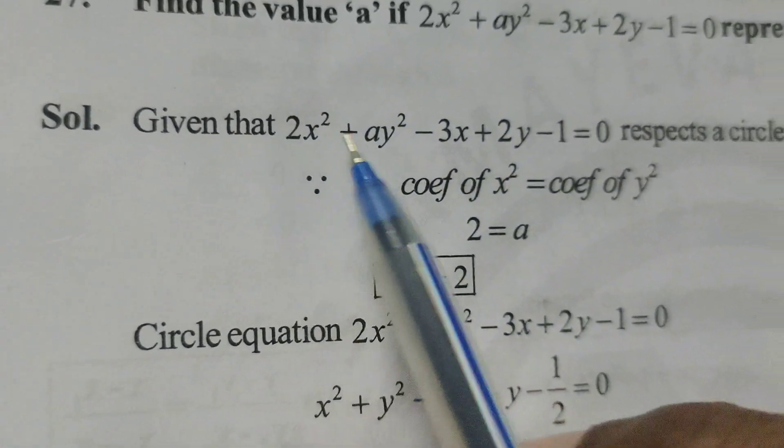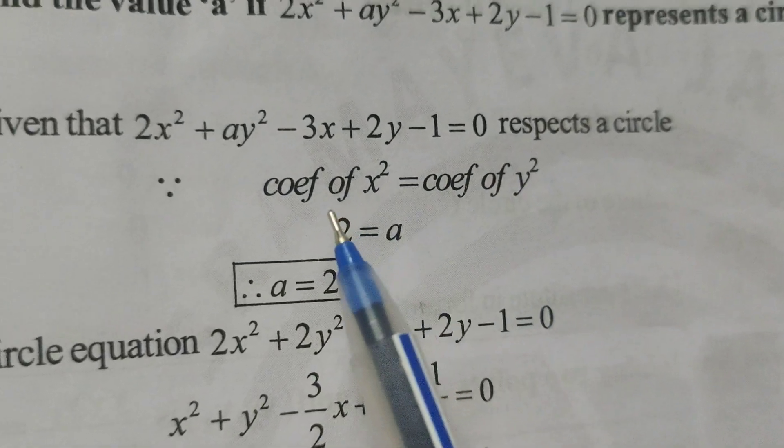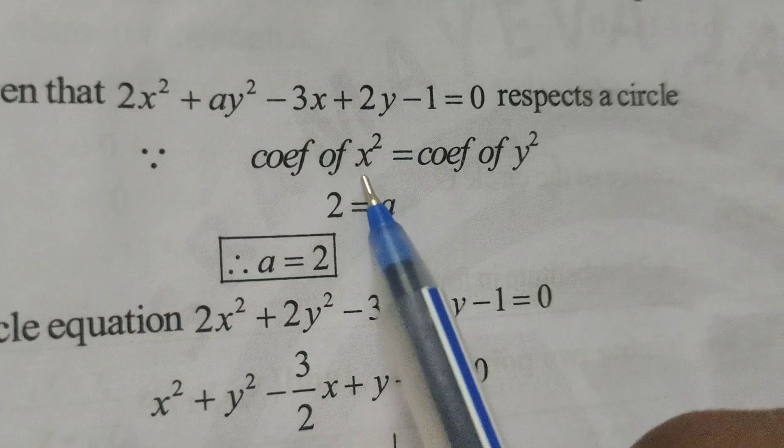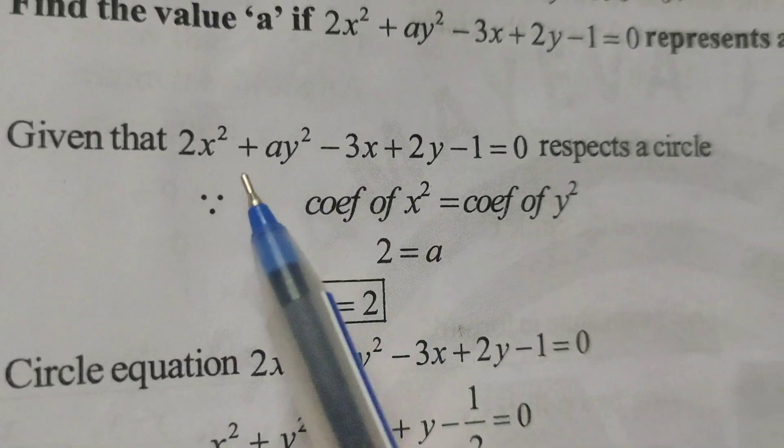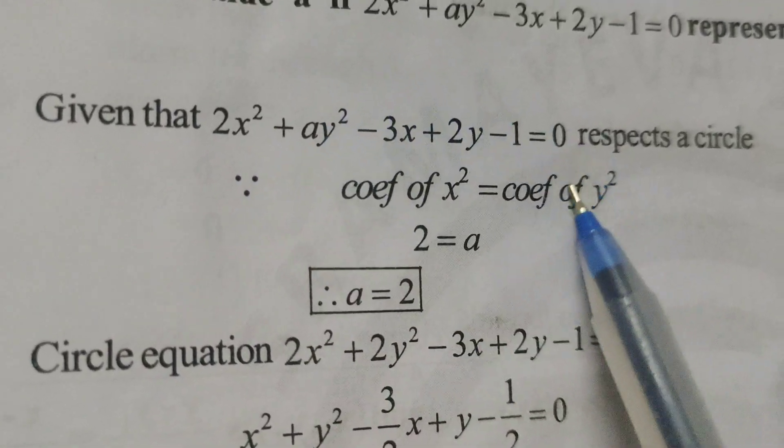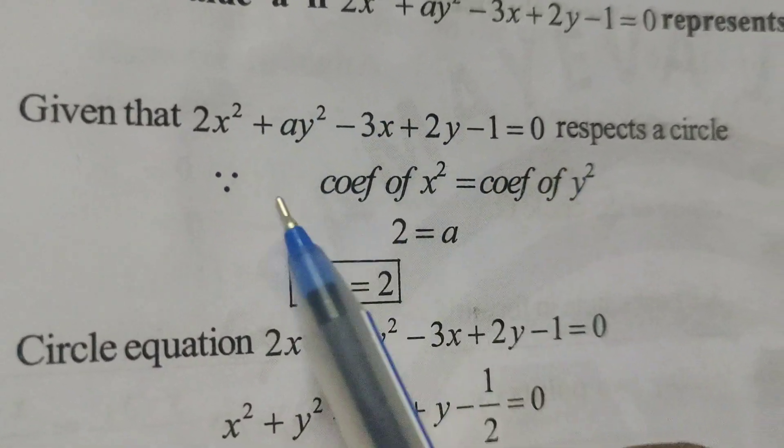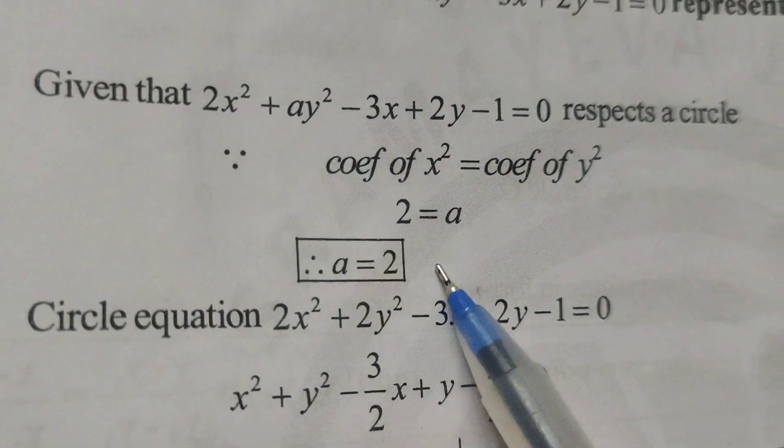Okay, first of all, here write, given circle equation, coefficient of x square equals to coefficient of y square. Therefore, using this formula, here find out the A value in this given circle equation. Therefore, A equals to 2.